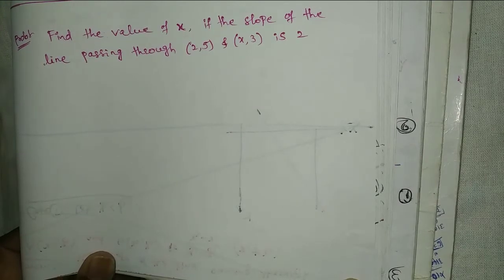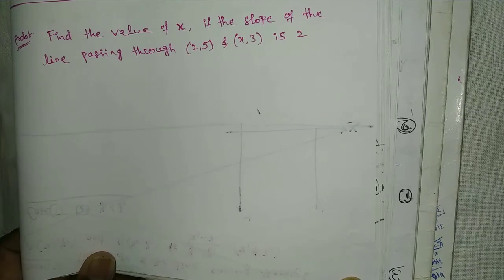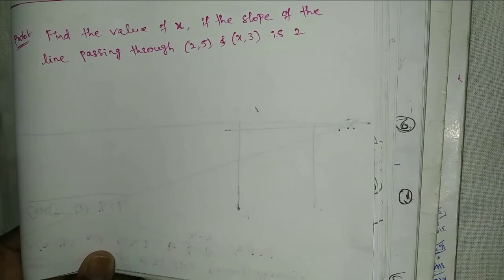Welcome to Rajesh Lekaloo. Today our topic is straight lines. Find the value of x if the slope of the line passing through 2,5 and x,3 is 2.